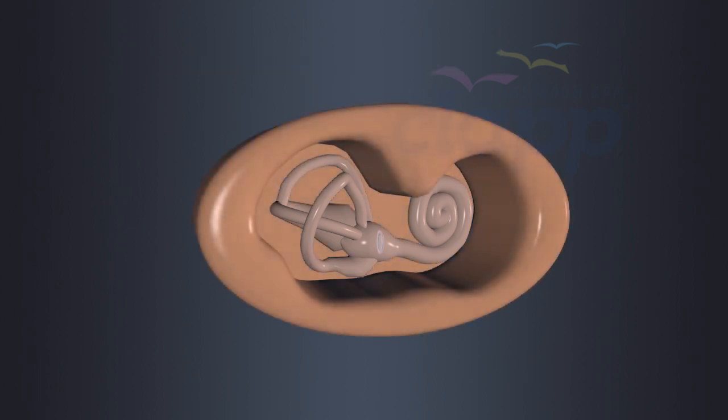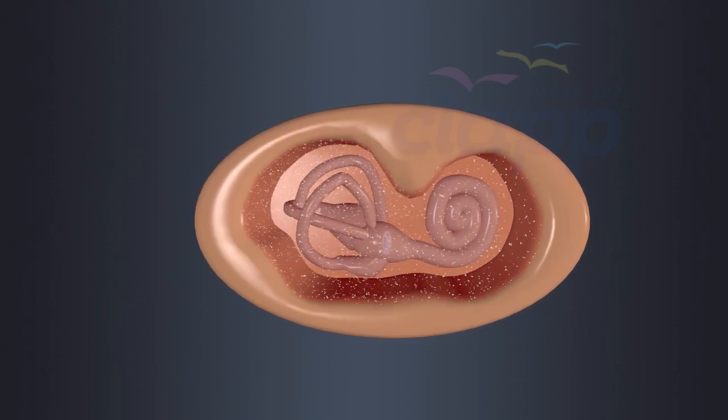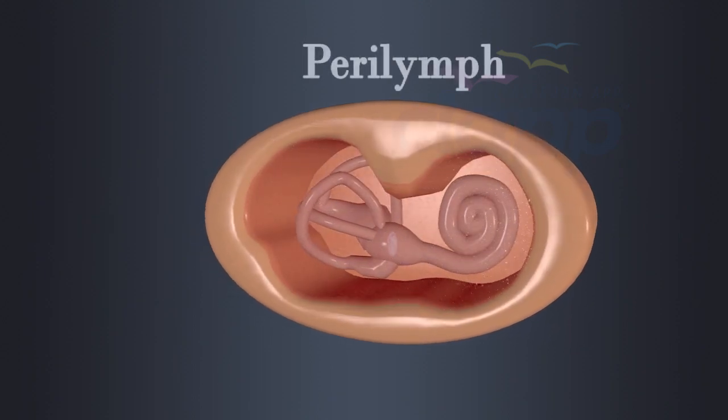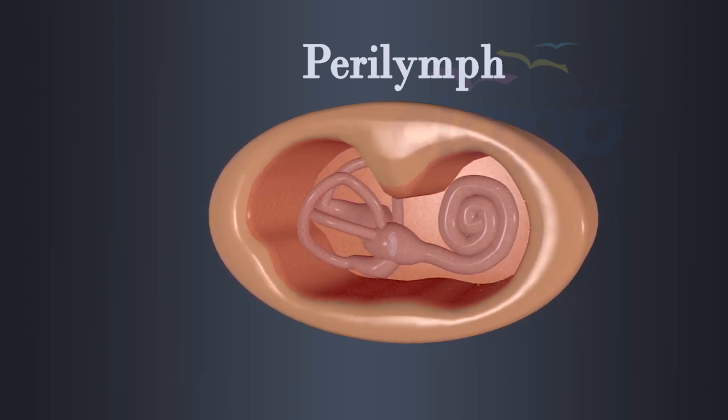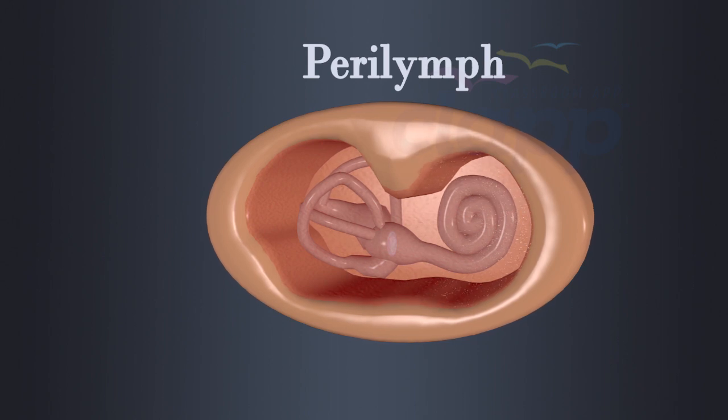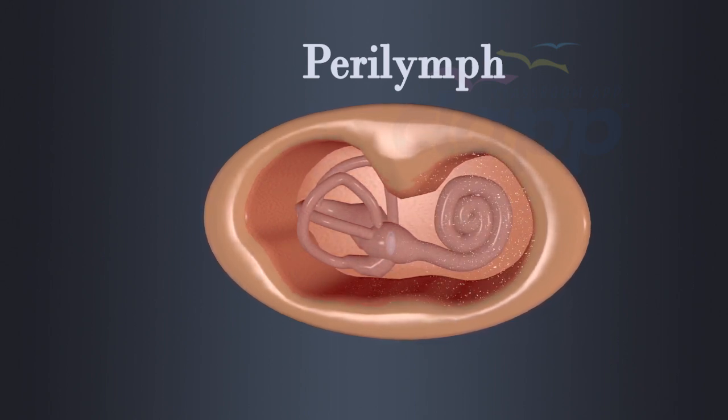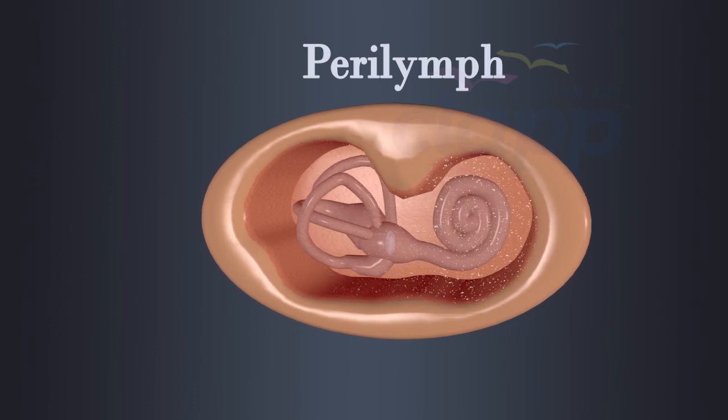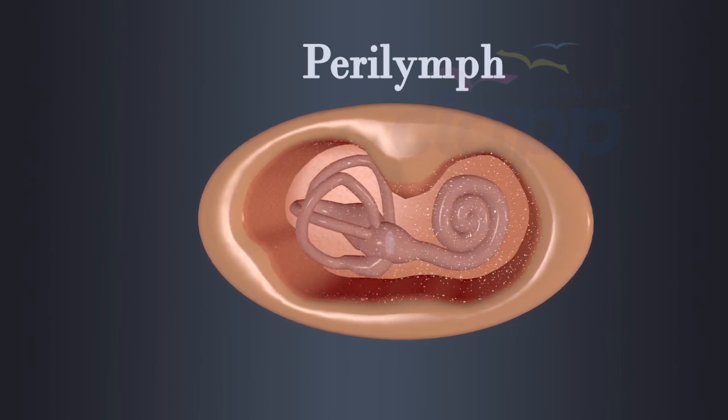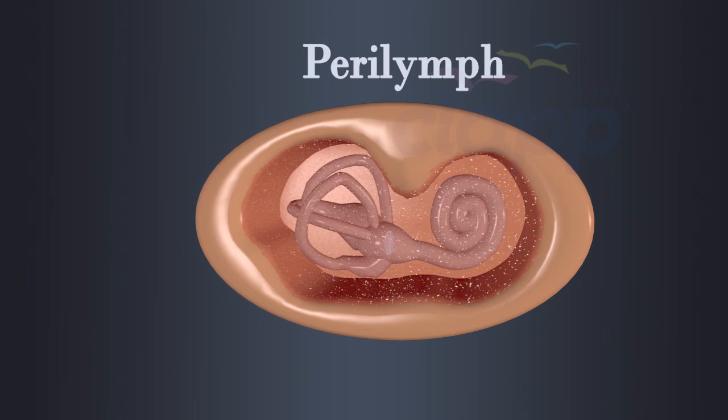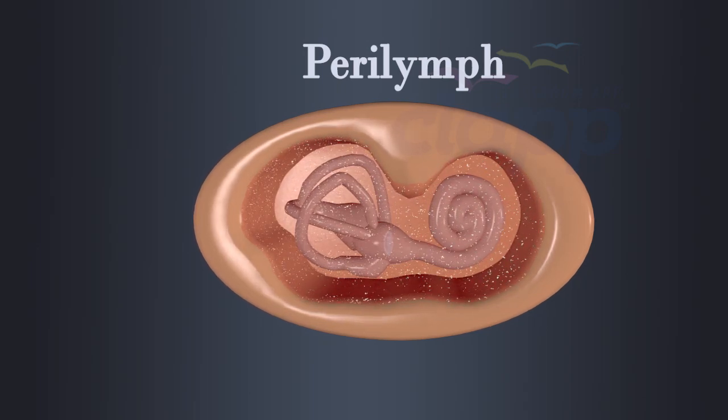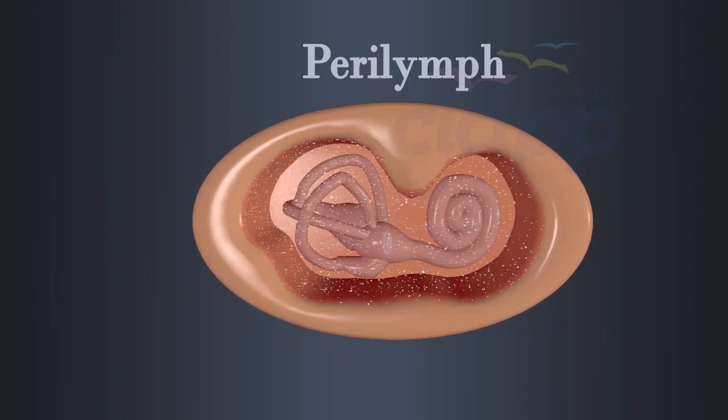The space between bony labyrinth and membranous labyrinth is filled with a fluid called perilymph. Perilymph plays a crucial role in protecting the inner ear. It also helps in transmitting sound vibrations from middle ear to the inner ear and maintains the proper functioning of sensory structures within the inner ear.